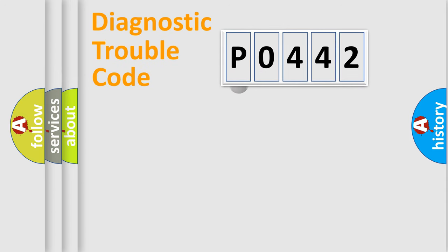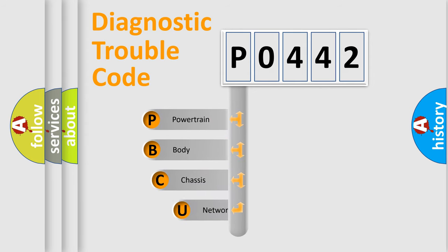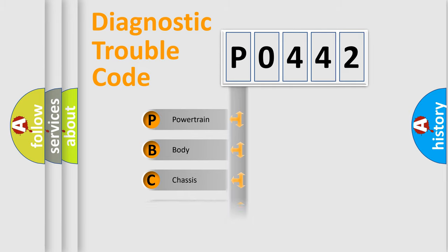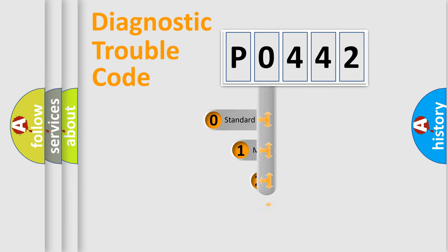First, let's look at the history of diagnostic fault code composition according to the OBD2 protocol. We divide the electric system of an automobile into four basic units: powertrain, body, chassis, and network. This distribution is defined in the first character of the code.